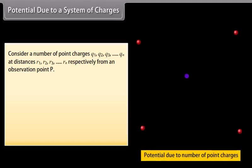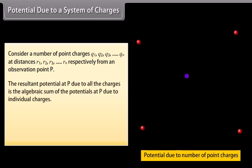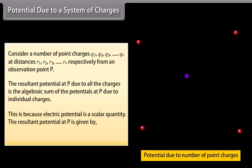Potential due to a system of charges. Consider point charges Q1, Q2, Q3, and so on up to Qn at distances R1, R2, R3, and so on up to Rn respectively from a point of observation P. The resultant potential at P due to all the charges is the algebraic sum of the potentials at P due to individual charges. This is because electric potential is a scalar quantity. The resultant potential at P is given by V equals V1 plus V2 plus V3 and so on up to Vn.